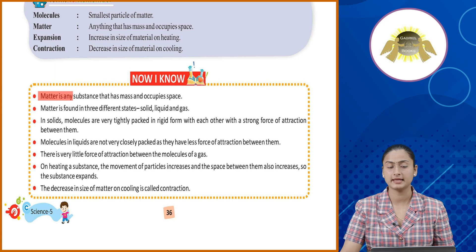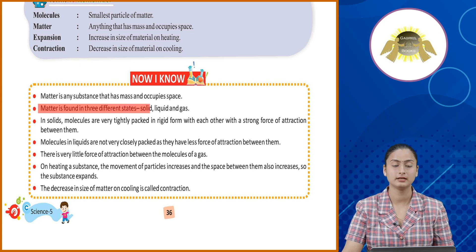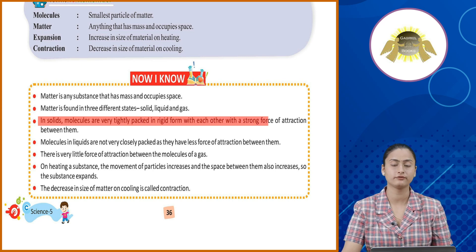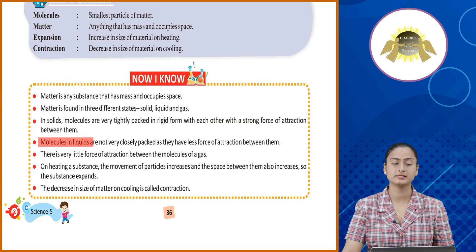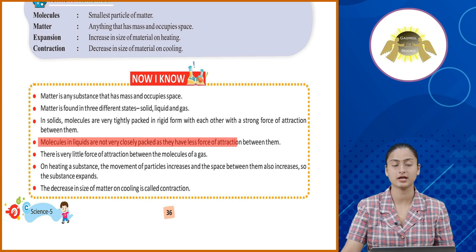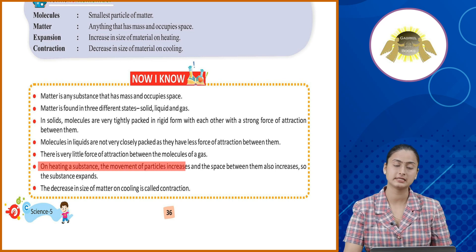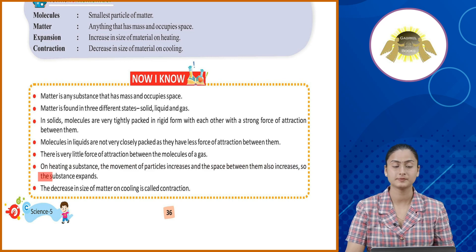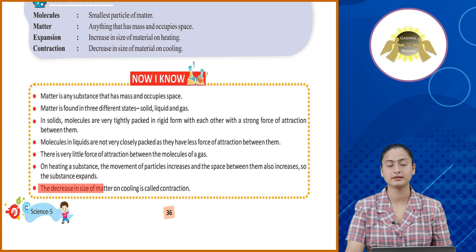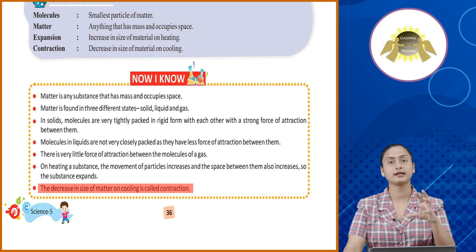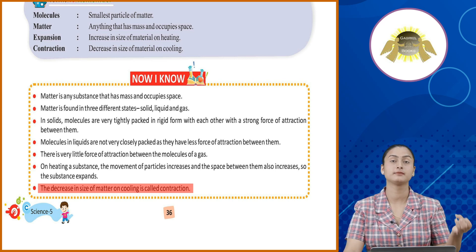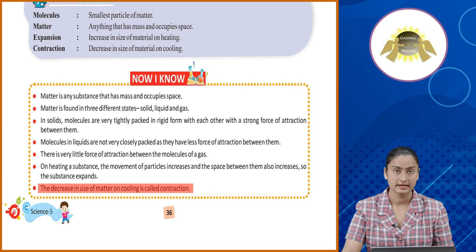Now I know. Matter is any substance that has mass and occupies space. Matter is found in three different states: solid, liquid and gas. In solids, molecules are very tightly packed in rigid form with a strong force of attraction between them. Molecules in liquids are not very closely packed as they have less force of attraction between them. There is very little force of attraction between the molecules of a gas. On heating a substance, the movement of particles increases and the space between them also increases, so the substance expands. The decrease in size of matter on cooling is called contraction. Yeh sariyo cheeze — contraction of matter, expansion of matter, matter kise kehte hai — yeh sab hum ne abhi is chapter mein kaafi detail mein padha.